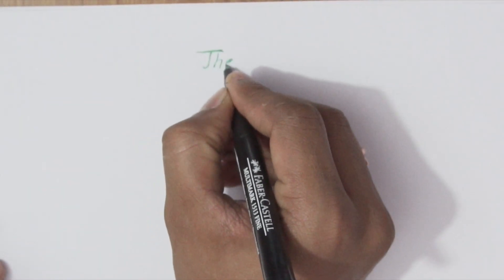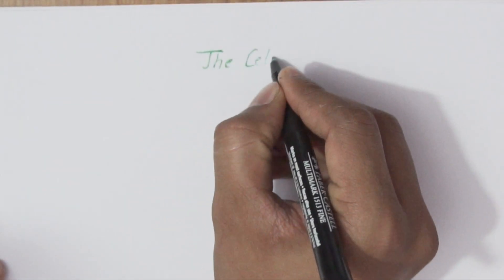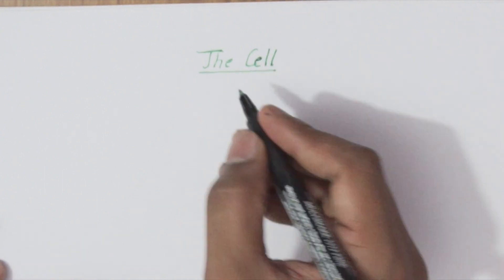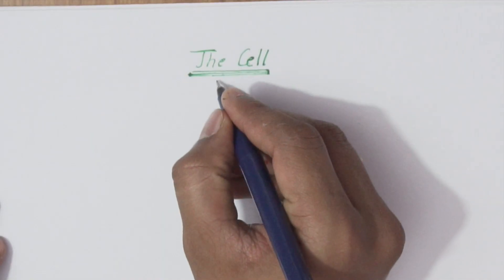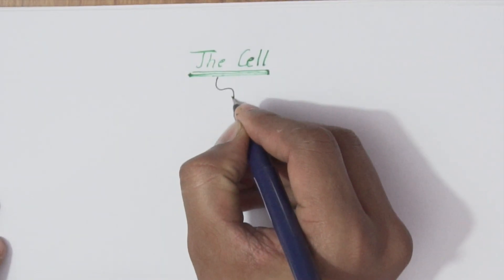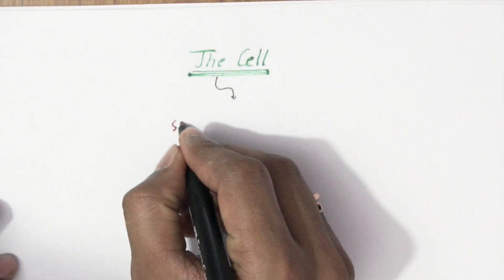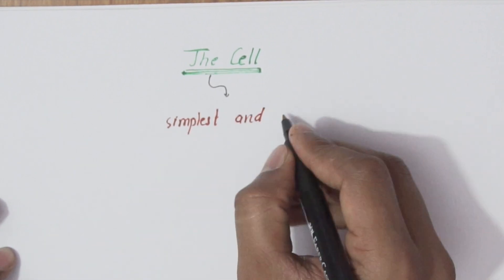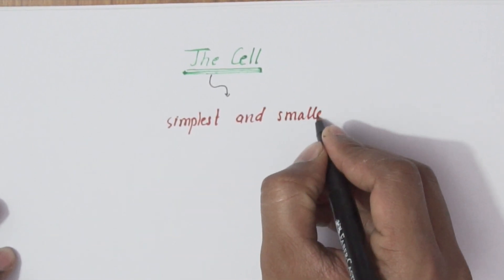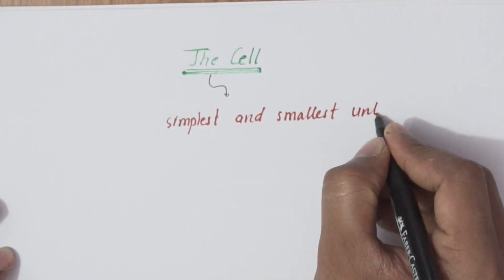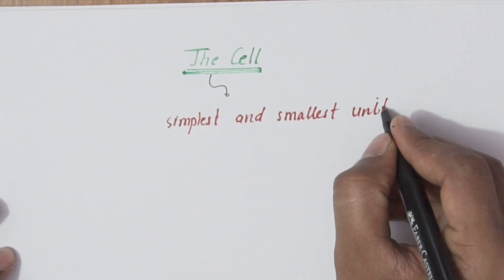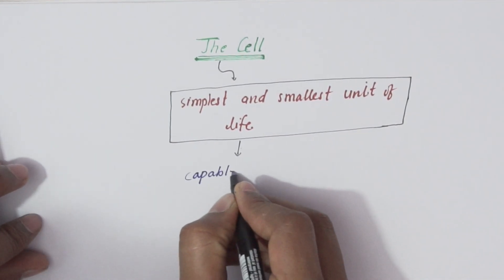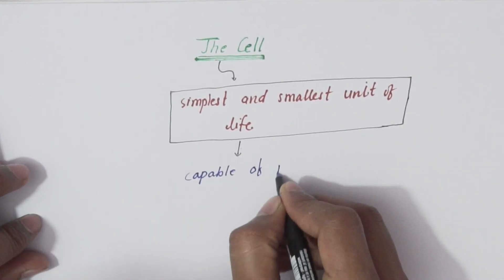Today we are going to discuss the most basic and fundamental chapter of human anatomy and physiology, which is the cell. As you all know, the cell is the simplest and smallest unit of life, which is capable of performing all the